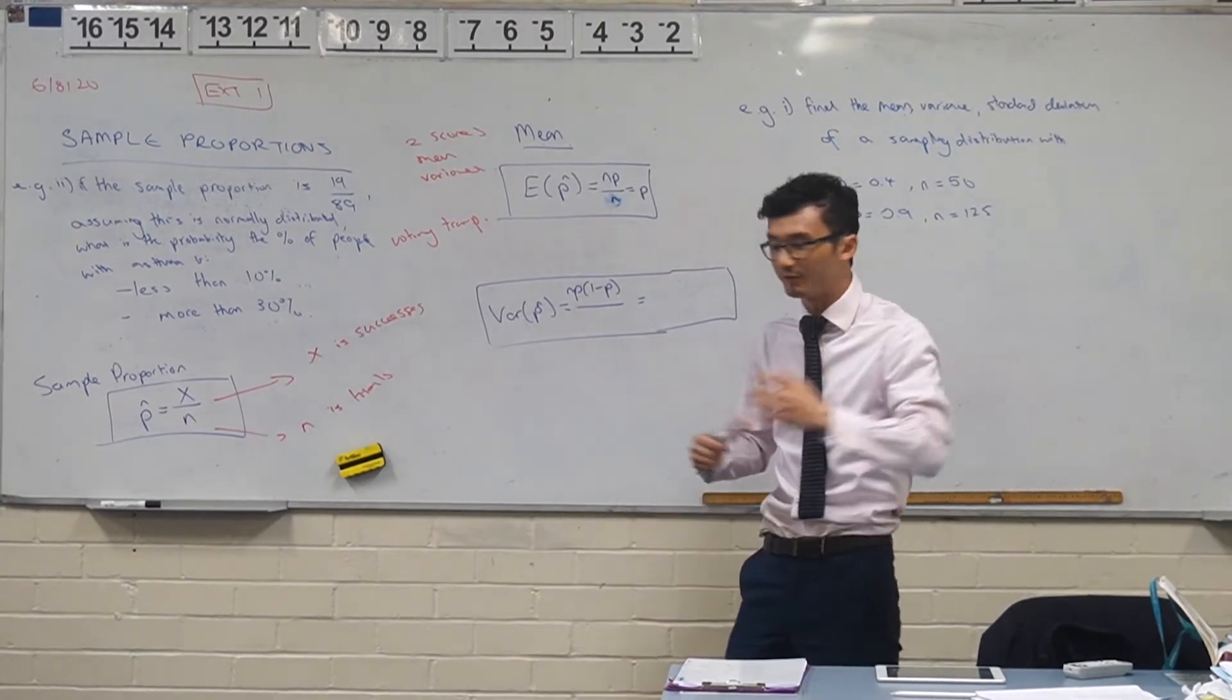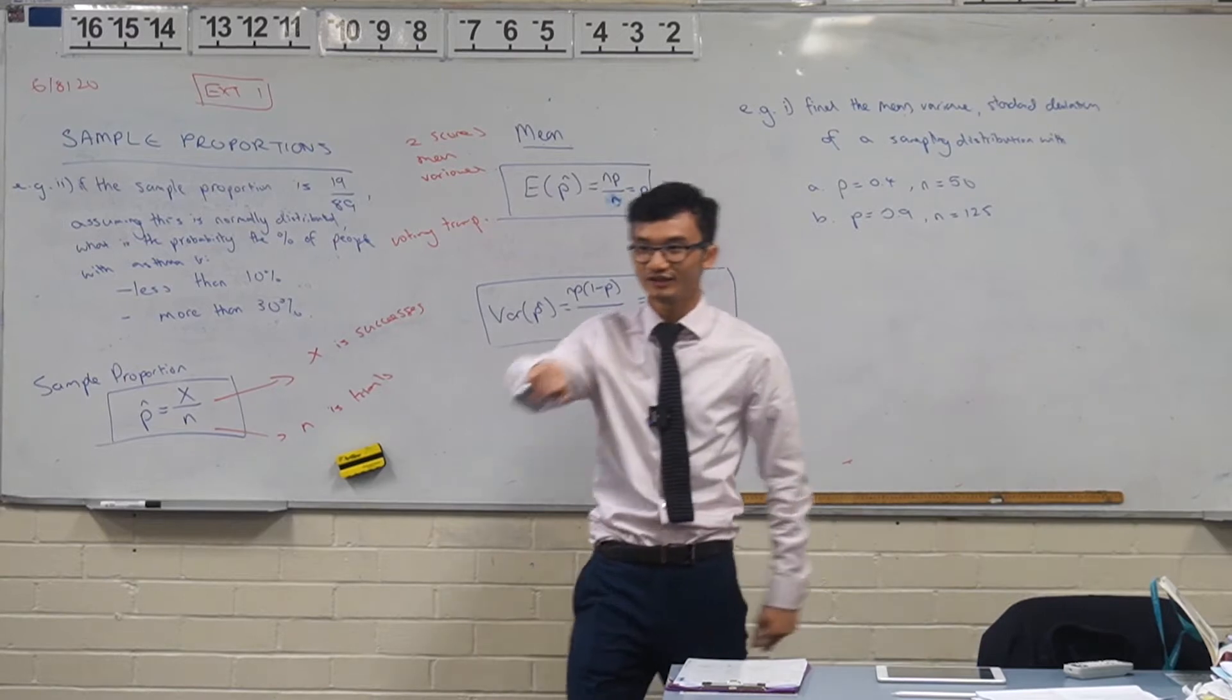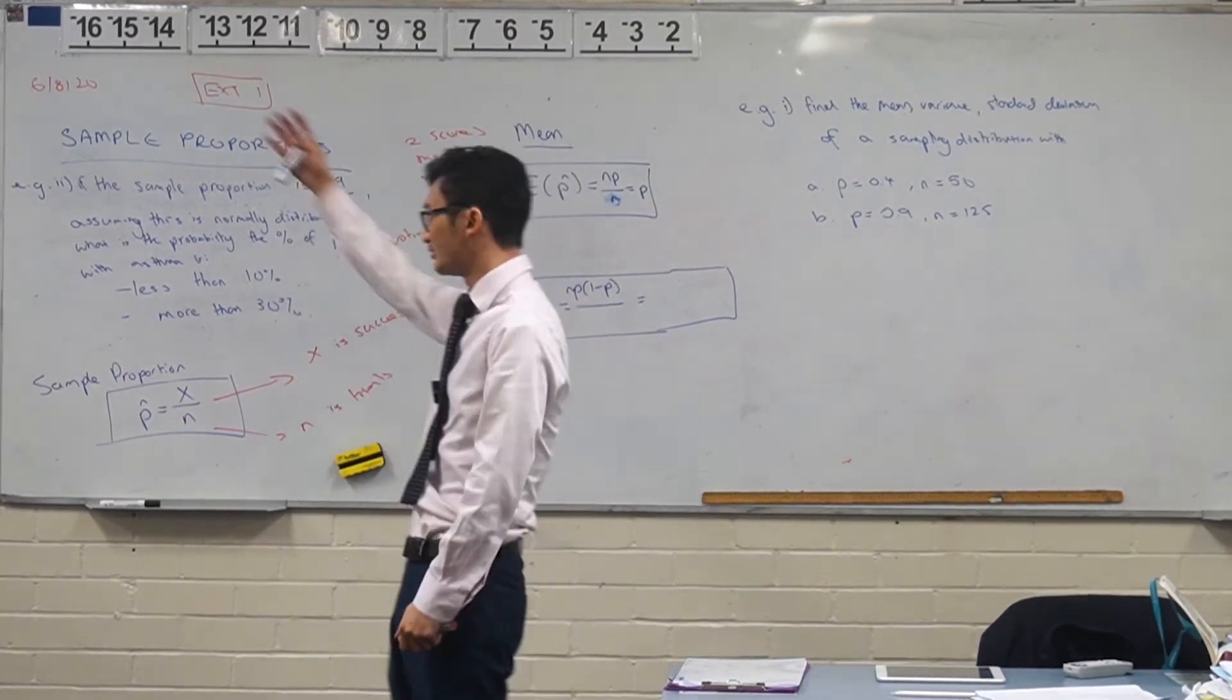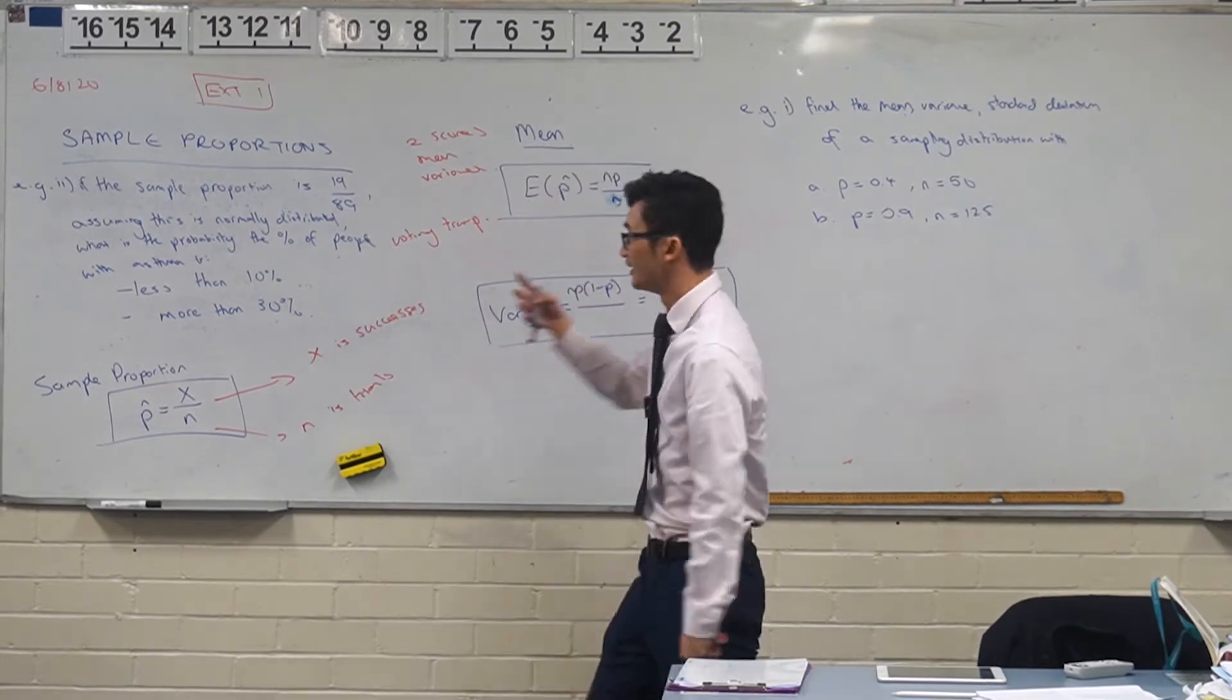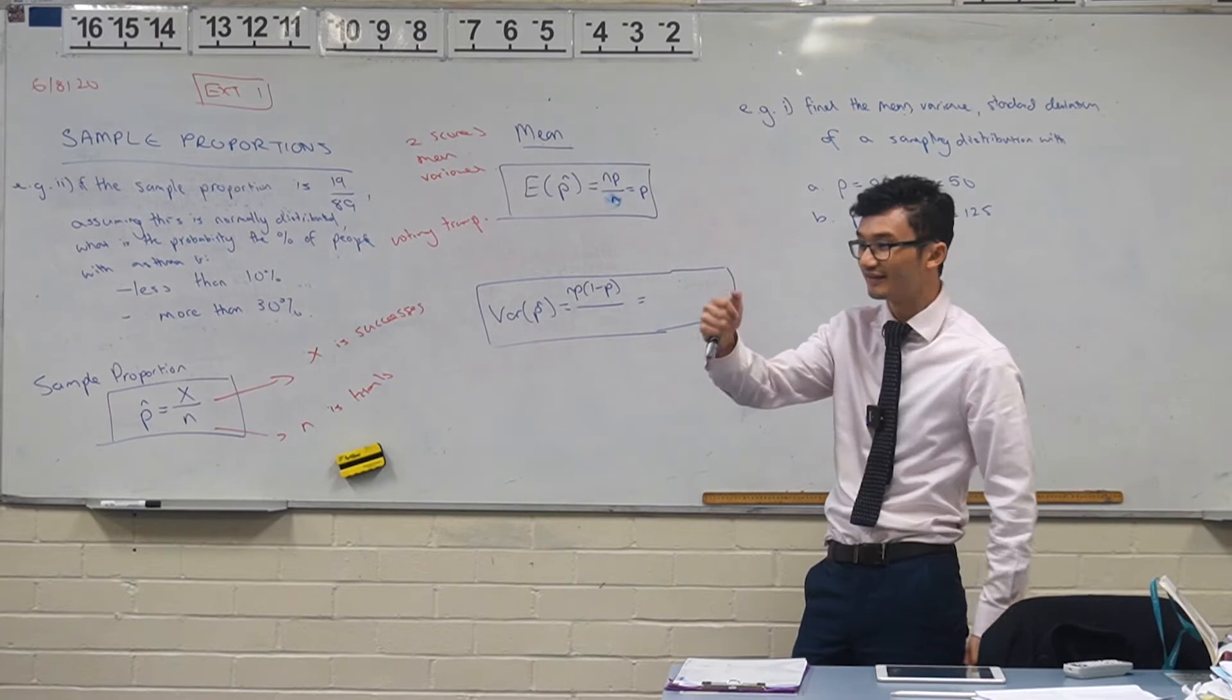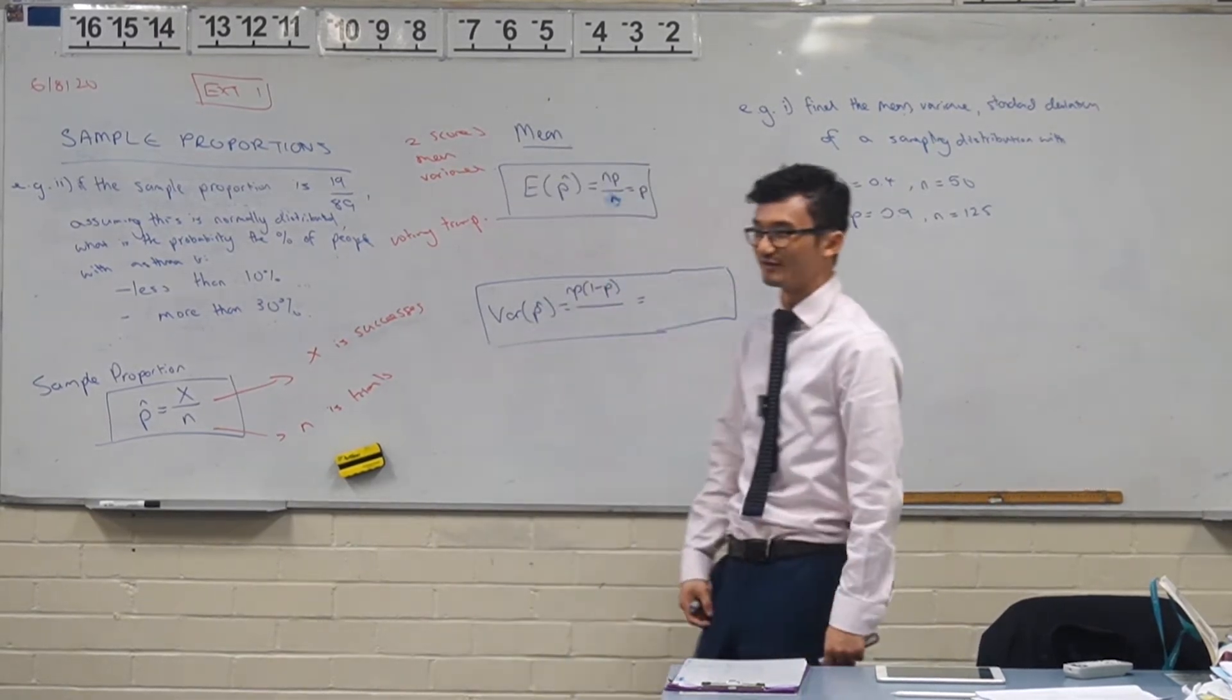So if for example in a population we took 89 as the sample size, that's how many we had, and we had 19 that have asthma or whatever thing we're looking for, then that's the sample proportion. So it's just like a percentage. Why asthma? Not to pick on anyone with asthma.